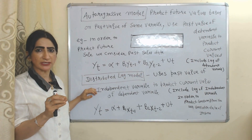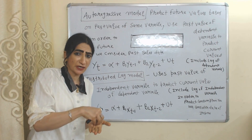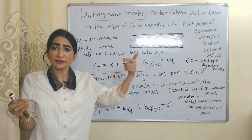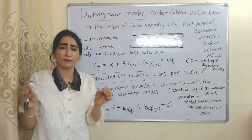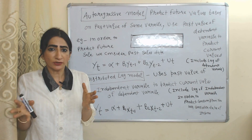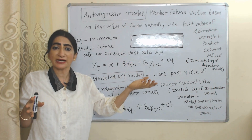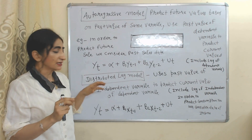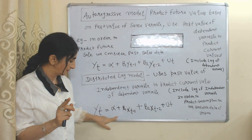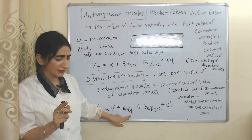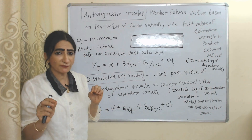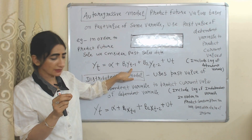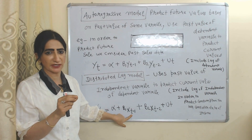On the other hand, the distributed lag model uses past values of the independent variable in order to predict the current or future value of the dependent variable. For example, to predict current consumption we use past income data, where income is the independent variable and consumption is the dependent variable. Therefore, the distributed lag model takes a lag of the independent variable — xt minus 1, xt minus 2 — not the dependent variable.